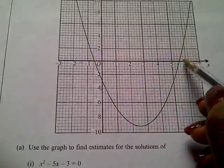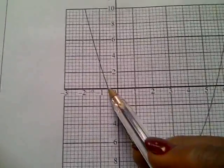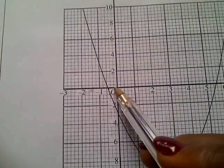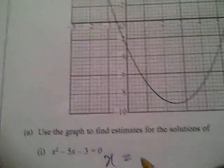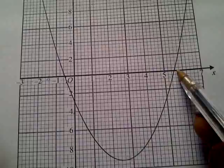So we have x equal to this is negative 0.2, 0.4, 0.6, and x equal to this 5.2, 5.4, 5.6.